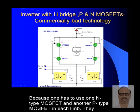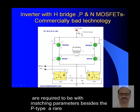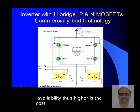Inverter with H-bridge using P-type and N-type MOSFETs is a commercially bad technology. Each limb requires one N-type and one P-type MOSFET with matching parameters. P-type MOSFETs are rarely available and thus have a higher cost, making this configuration commercially undesirable.